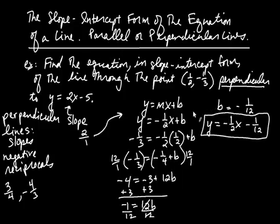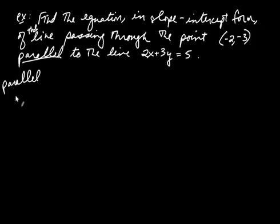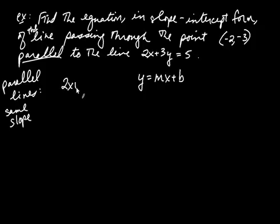Let's try another one where the line we're looking for is parallel to some other line. Find the equation in slope-intercept form of the line passing through the point negative two, negative three, parallel to the line 2x plus 3y equals 5. Remember, parallel lines have the same slope. So we're looking for y equals mx plus b, and we'll start by finding the slope of the other line.